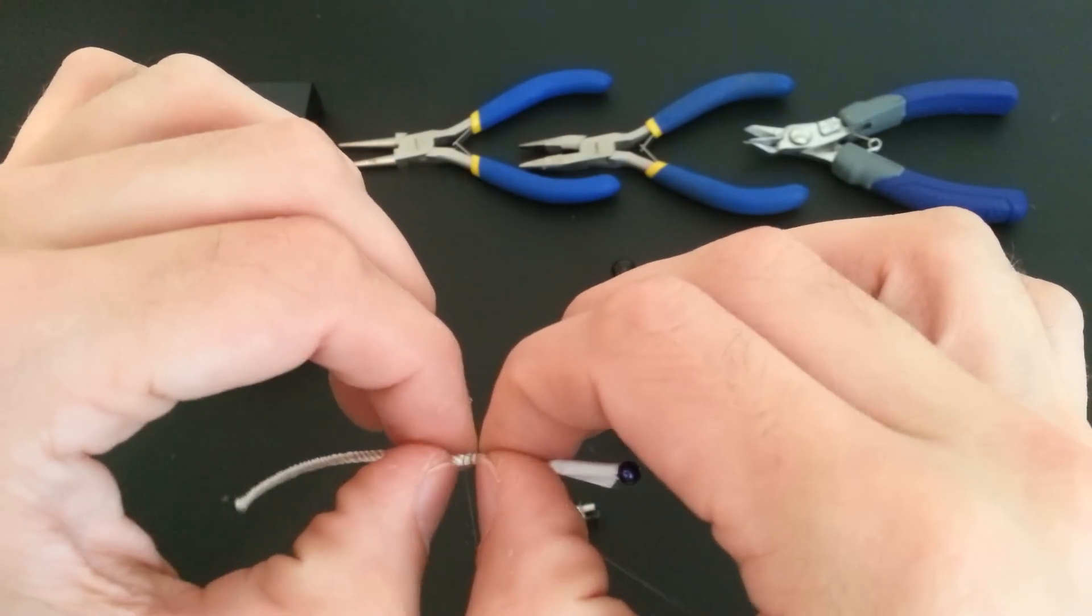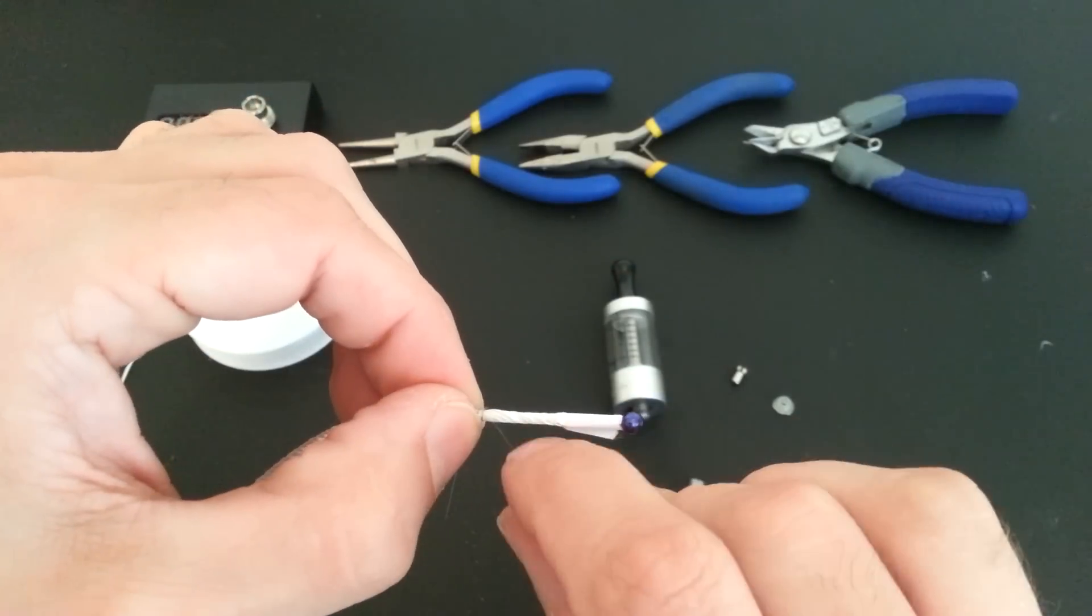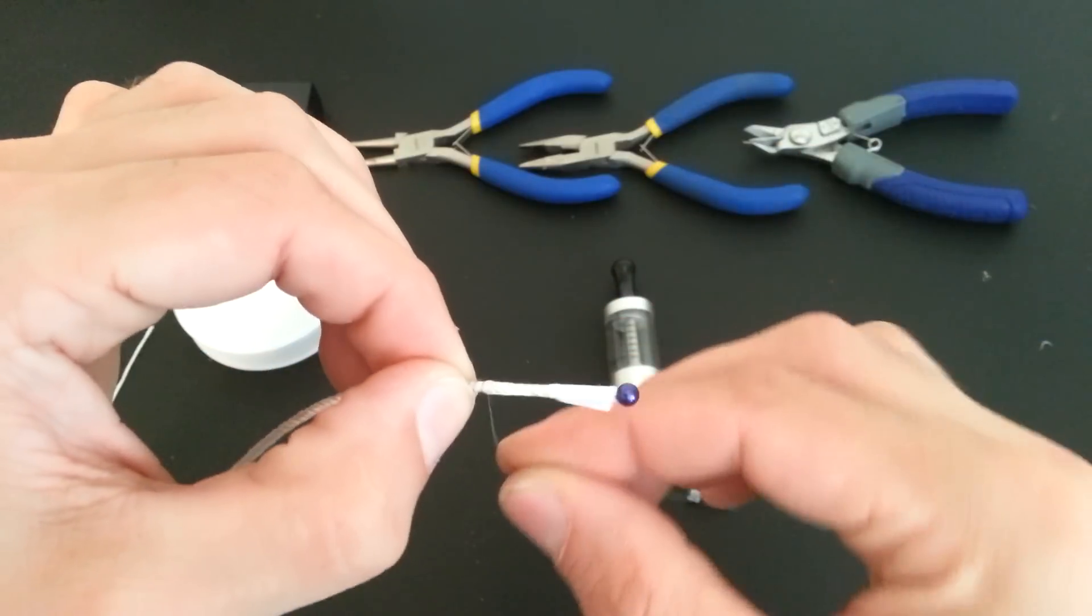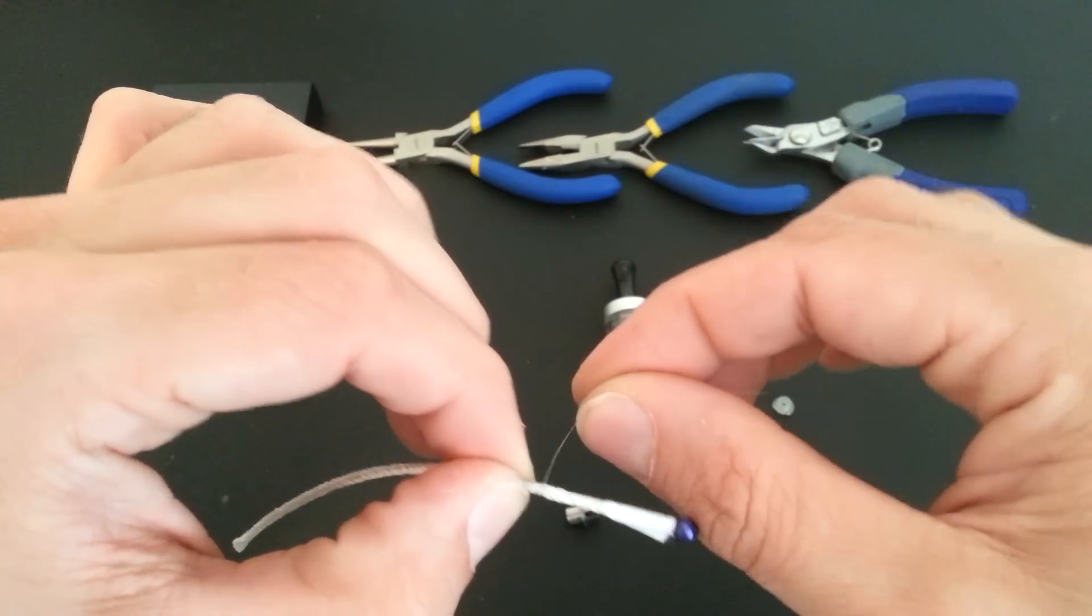And then drag the wire over to the side a little bit, and start three wraps on the right-hand side.